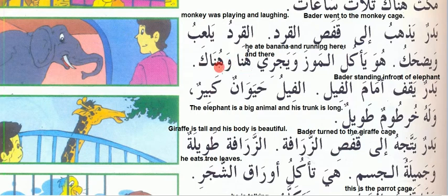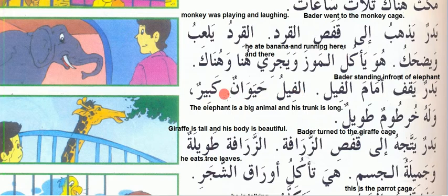'Badr yaqifu amama al-fil' — Badr is standing in front of the elephant. 'Al-fil haywan kabir' — the elephant is a big animal. 'Lahu' means 'his' and 'laha' means 'her'. 'Lahu khartum' — his trunk is long. Note: 'lahu' is his and 'laha' is her.